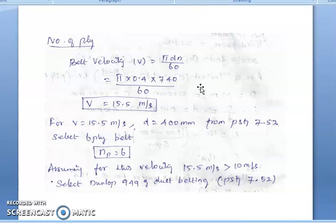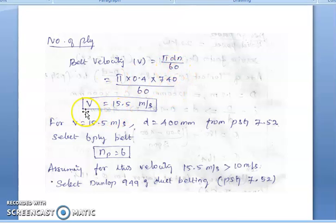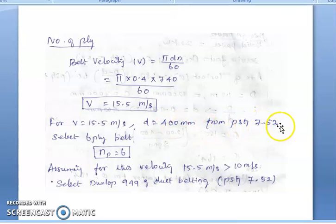For the belt rating, we need the number of plies and velocity. The velocity of the belt is V = π·D·N / 60 = 15.5 meters per second. Based on this velocity and driver diameter D = 400 mm, from page 7.52, we select 6 plies.